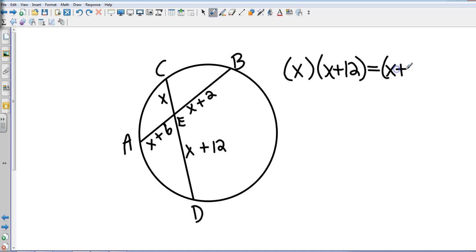So I'm going to multiply the pieces. That's going to be X times X plus 12, and that's going to be equal to X plus 6 times X plus 2. The first one's going to be distributive property, so that's just X squared plus 12X.